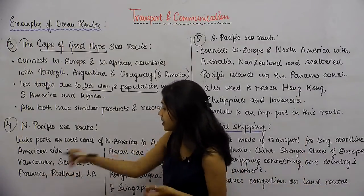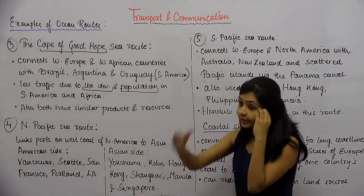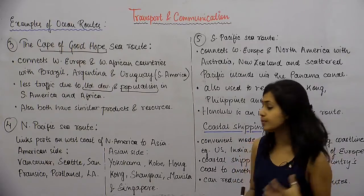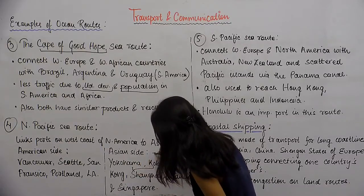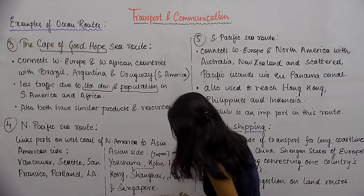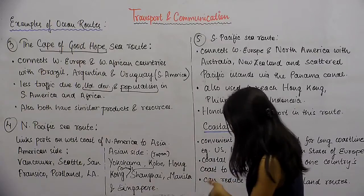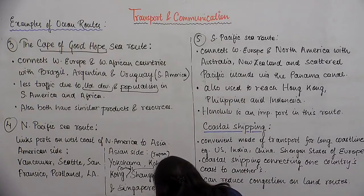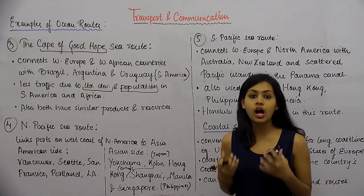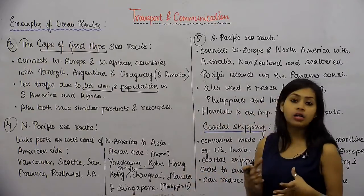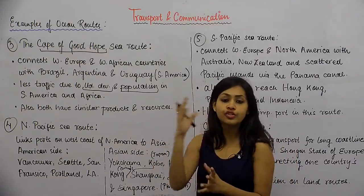On the American side, if you look at the map of the US, you will be able to see ports like Vancouver, Seattle, San Francisco, Portland, and Los Angeles on America's west coast. On the Asian side, we have ports like Yokohama and Kobe in Japan, Hong Kong and Shanghai in China, Manila in the Philippines — which is a Southeast Asian country — and Singapore. So America's west coast ports trade with all these South Asian and Southeast Asian countries.